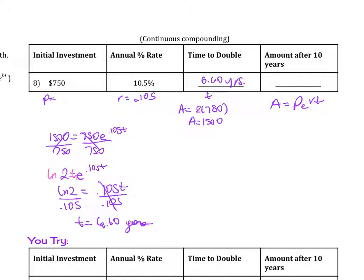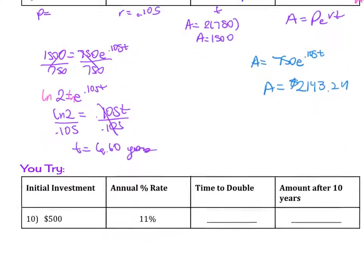Then the amount after 10 years. So it's giving us our time. Time is 10, and so we're trying to find A. What is A? So we plug it in. A equals a principal of 750 times e raised to the rate of 0.105 times time. Then you just plug it into the calculator and you would get $2143.24. And that's how you do that problem.